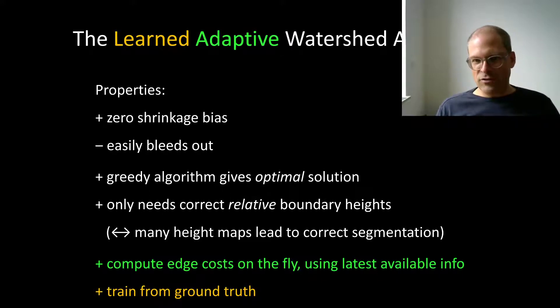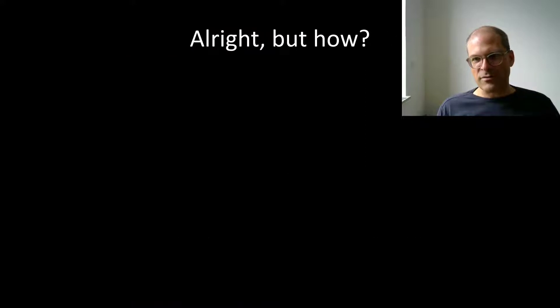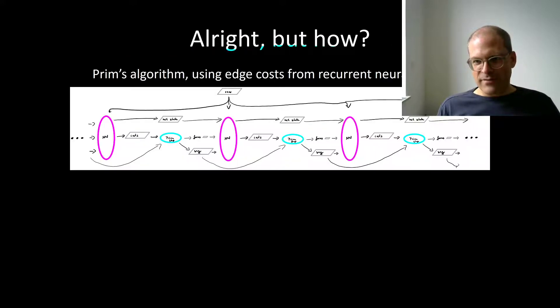taking into account the partial segmentation obtained previously. And it would be nice to have to train this from ground truth. And it's actually possible. But how? By unrolling all these computations and casting them as layers in a neural network.